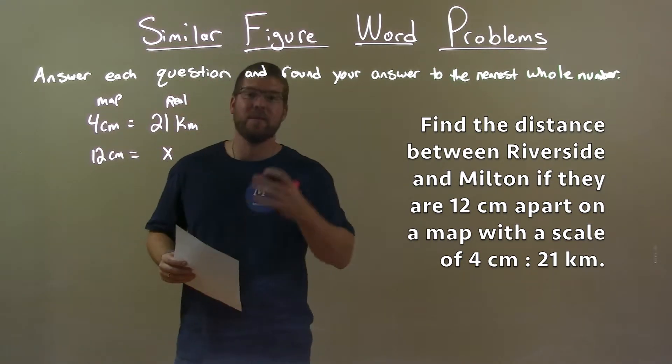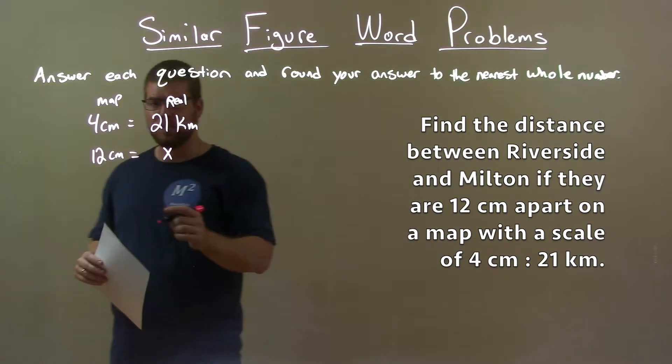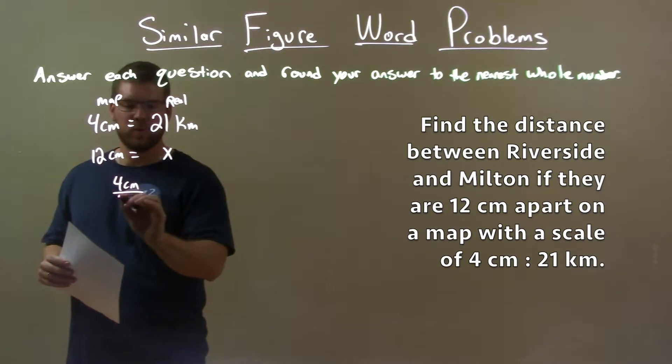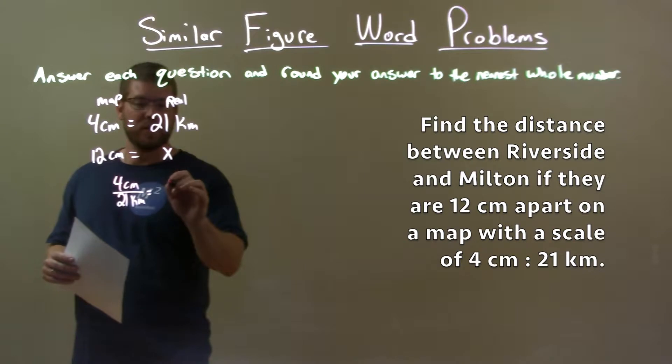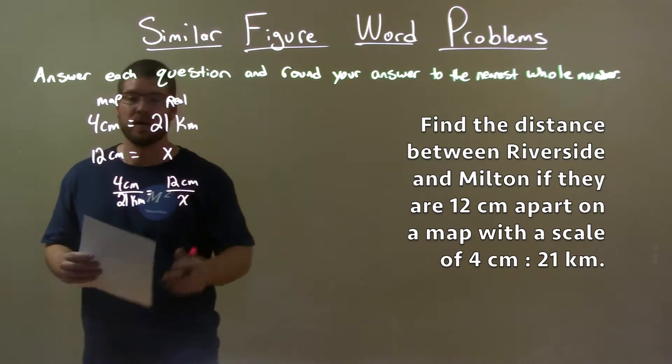With this information we have to create a proportion. 4 centimeters to 21 kilometers, that scale should equal our 12 centimeters to our x value in kilometers.